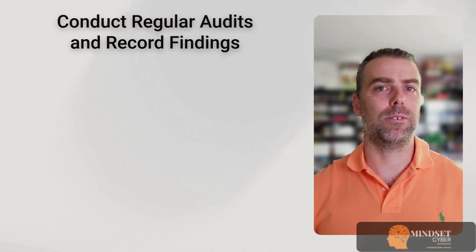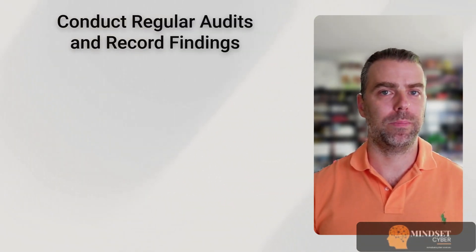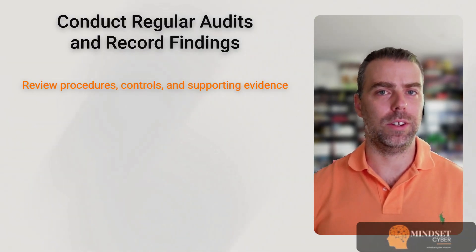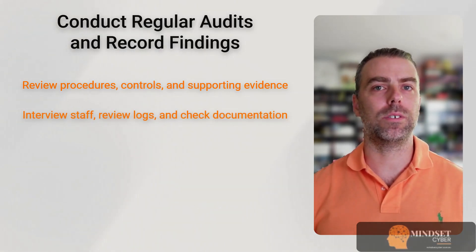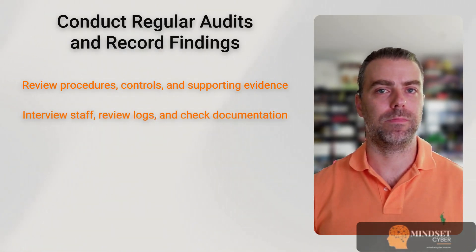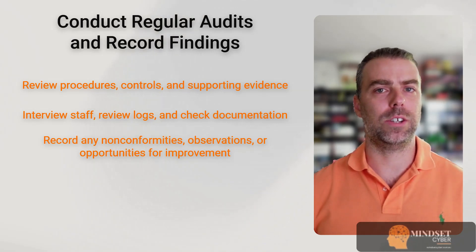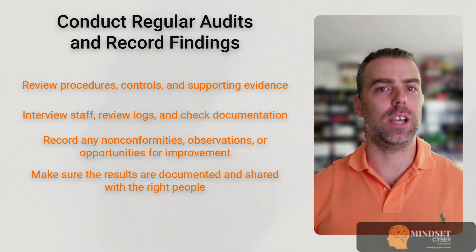When you run an audit, review procedures, controls, and supporting evidence. Interview staff, review logs, and check documentation. Record any non-conformities, observations, or opportunities for improvement, and make sure the results are documented and shared with the right people. You'll then need to implement corrective actions for non-conformities. If a control isn't implemented properly or something isn't working, investigate the root cause, define and assign corrective actions, track them to completion, and review and update affected policies or procedures.